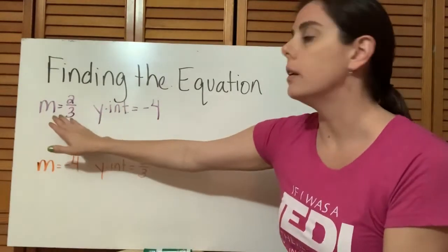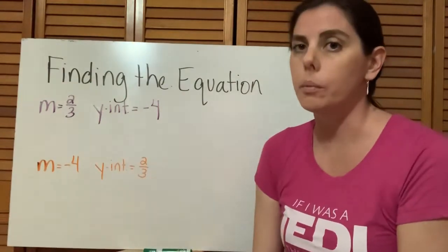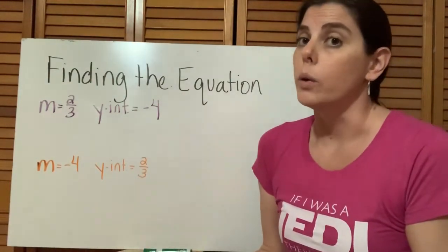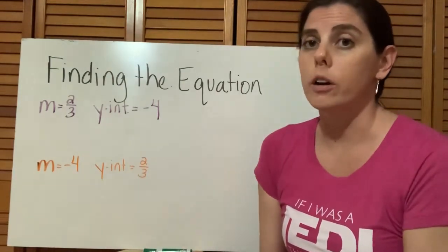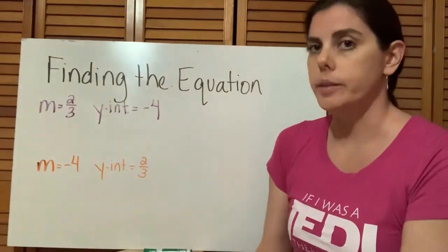So if we are given a slope and a y-intercept, are we able to find the equation of that line? Well, we just have to remember what the form of our equation is: y equals mx plus b.